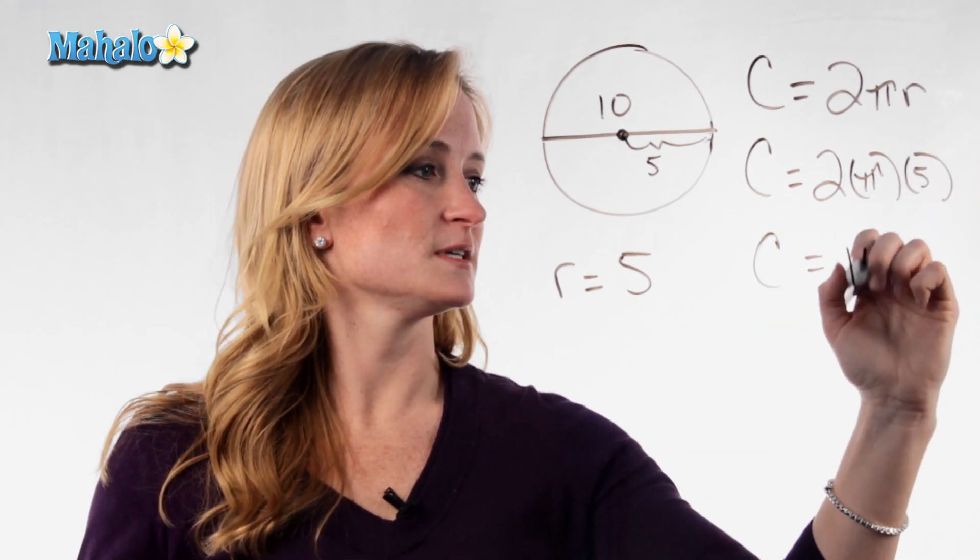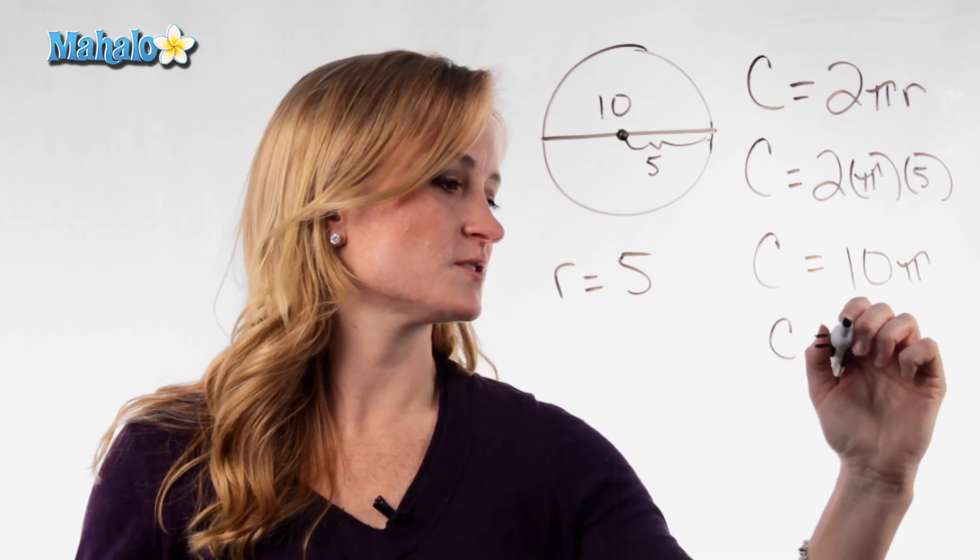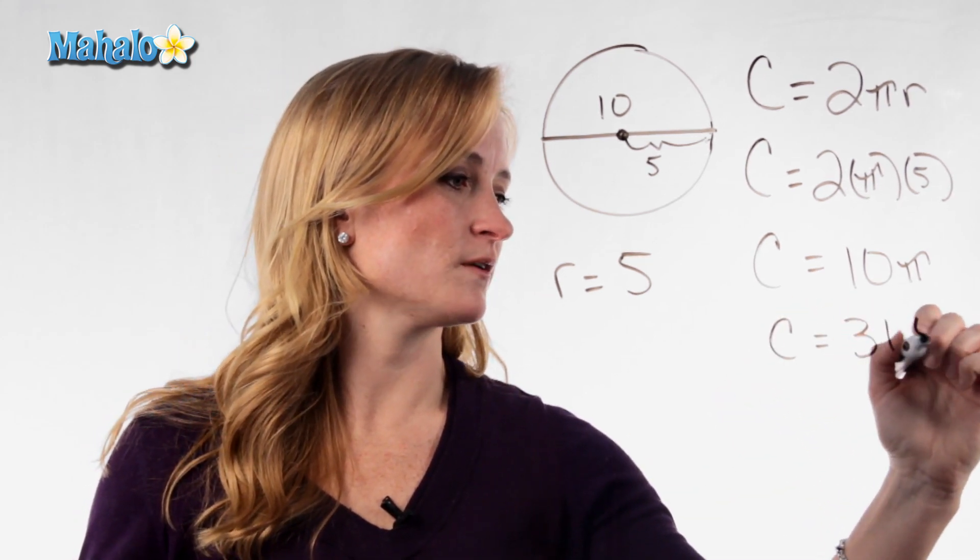So C would equal 10 pi, and when you multiply that out, your circumference is 31.4.